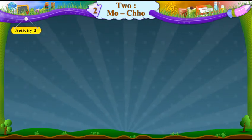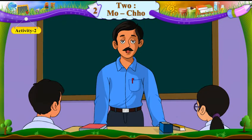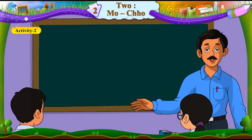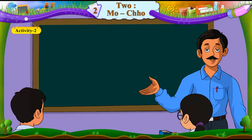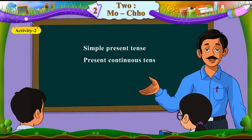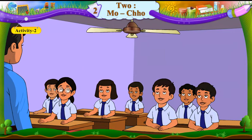Activity 2. Good morning, students. Good morning, sir. Students, today we will learn simple present tense, present continuous tense and simple past tense. Okay, sir.